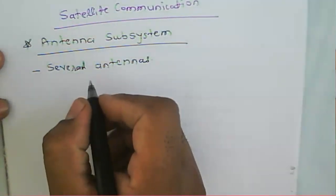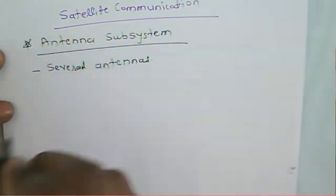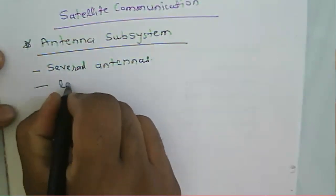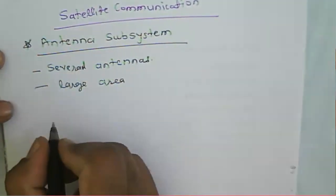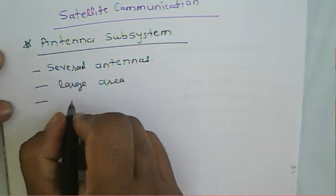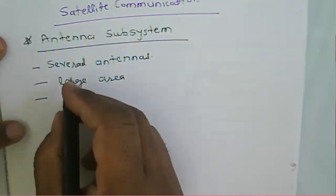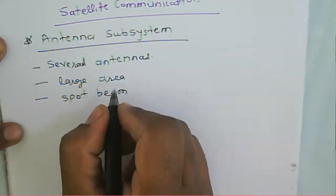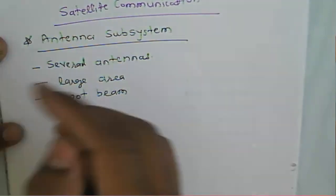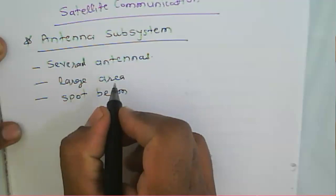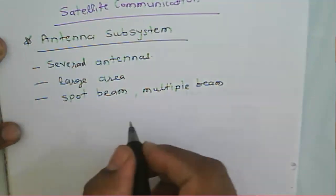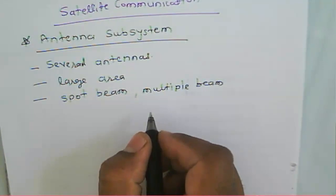What types of antennas can be used in a satellite? Generally, we expect the antenna to cover a large area. We also expect that the antenna should provide coverage for a particular region — that's why instead of a large area antenna, we can say we need a spot beam or multiple beam antenna. With multiple beams, we are able to concentrate on a particular given region.